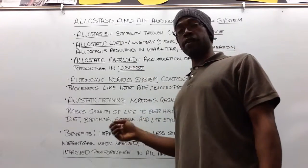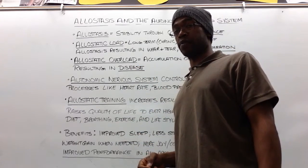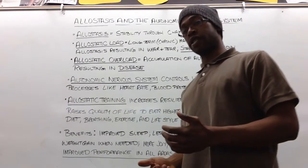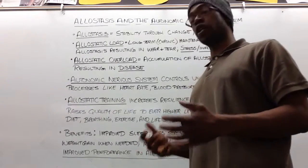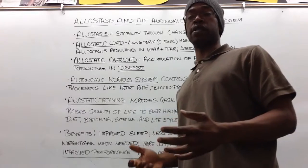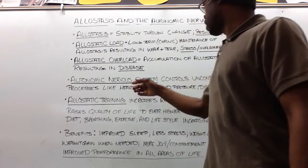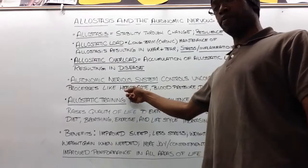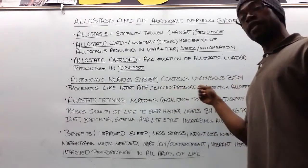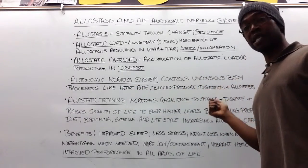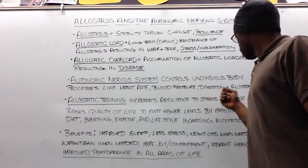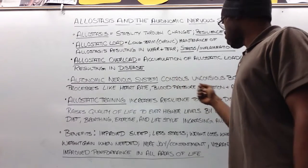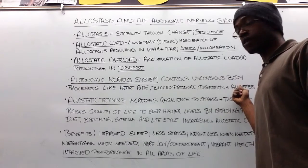So how does this relate to the autonomic nervous system? The autonomic nervous system is part of the nervous system that controls unconscious processes in the body — things like heart rate, blood pressure, digestion, sleep, and of course aleostasis. The autonomic nervous system controls aleostasis.